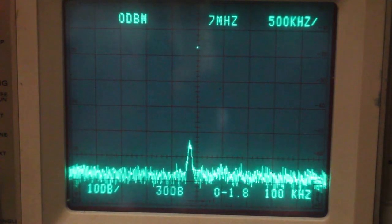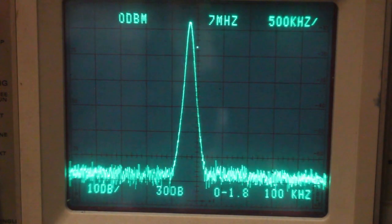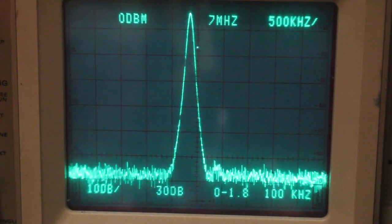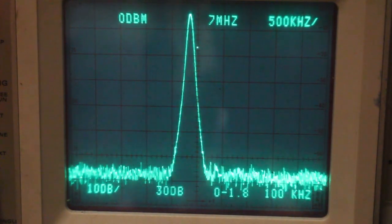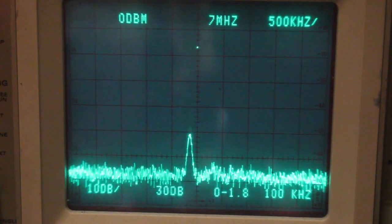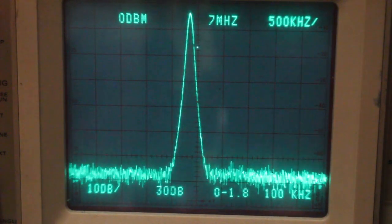You could also have this connected to AGC—set up an AGC circuit in a homebrew receiver. This stage would definitely work pretty well as an AGC stage.